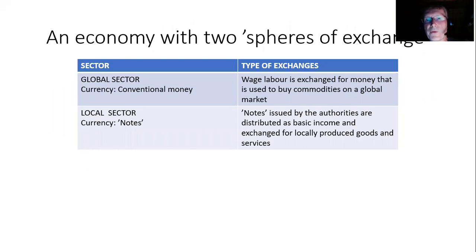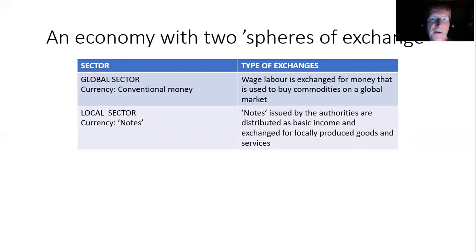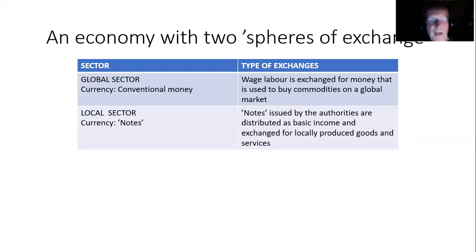We would create an economy with two spheres of exchange — a concept from economic anthropology. Many societies have had more than one sphere of exchange. We would have, alongside a global sector very much like the modern economy where the currency is conventional money and wage labor is exchanged for money used to buy commodities on a global market, a local sector where the currency is these notes issued by the authorities, distributed as basic income, and exchanged only for locally produced goods and services.